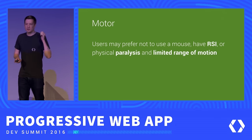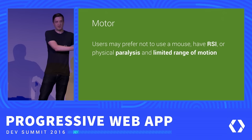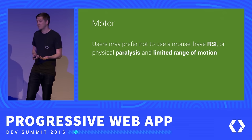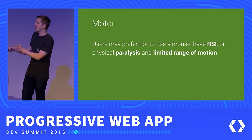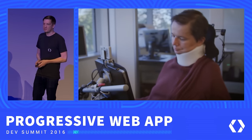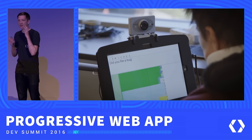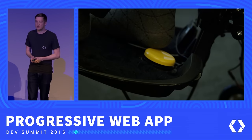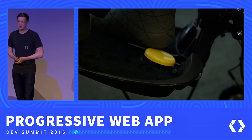For motor impairment, these users span the gamut from folks who prefer not to use a mouse due to repetitive stress injury like carpal tunnel syndrome, or a broken arm or sprained wrist, all the way to someone who is physically paralyzed with a limited range of motion. For these users, they may use head or eye tracking devices — this is an example of a program called Dasher, which uses a webcam to track head and eyes and help them type. They may also use a keyboard, a switch device, or voice control.